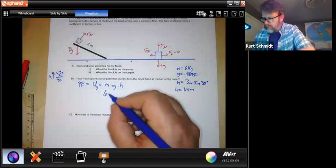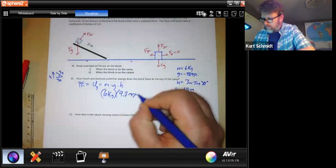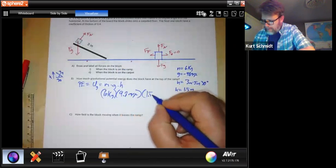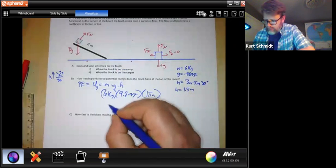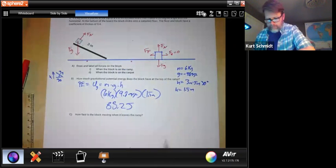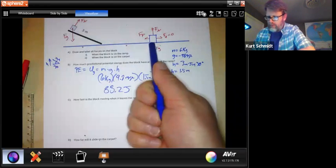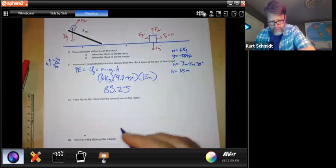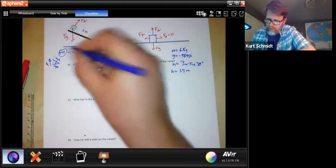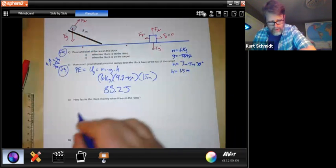So now I can do six kilograms times 9.8 times 1.5. And that should get you down to 88.2 joules. All right, by the way, the scoring, two points here, two points here, three points there. And then, so I'm going to give myself a little grade here. Very good, Mr. Schmidt.